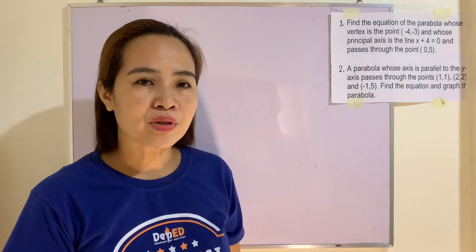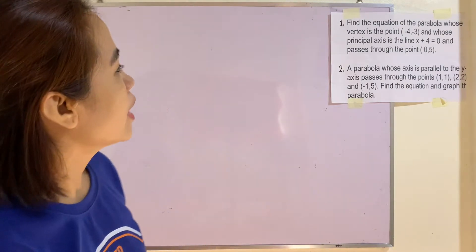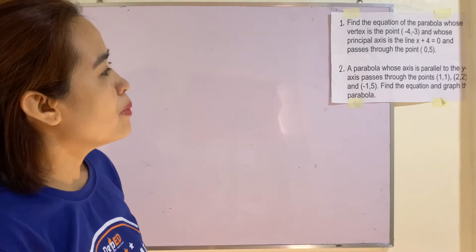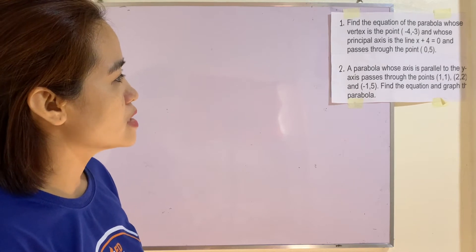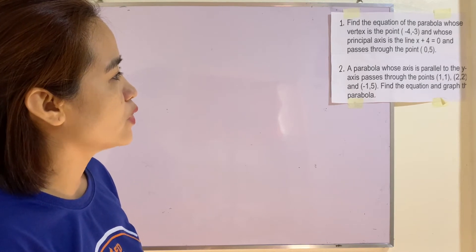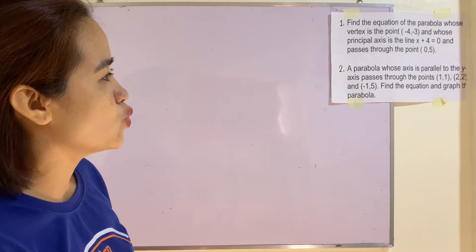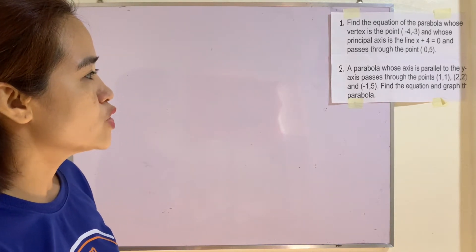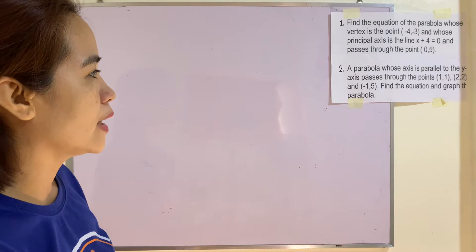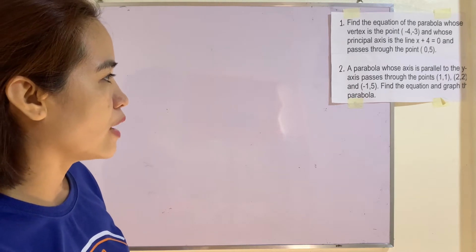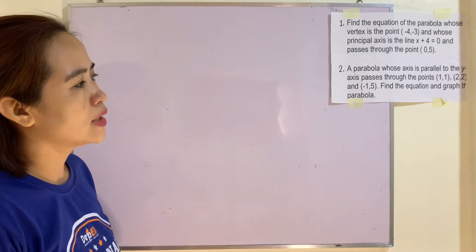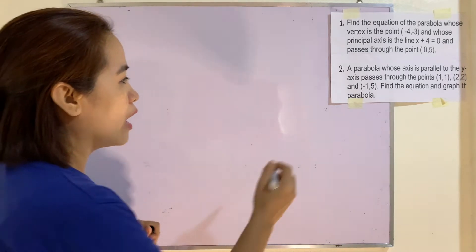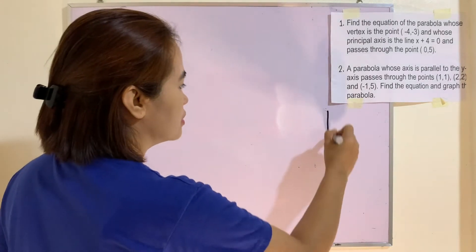Example 2: A parabola whose axis is parallel to the y-axis passes through the points (1, 1), (2, 2), and (-1, 5). Find the equation and graph the parabola.